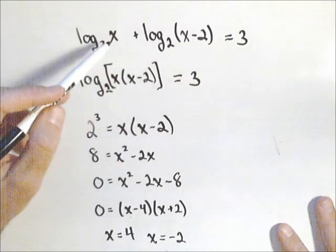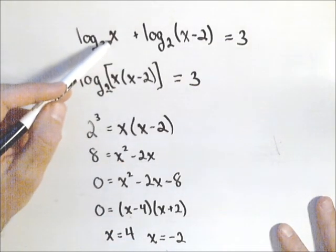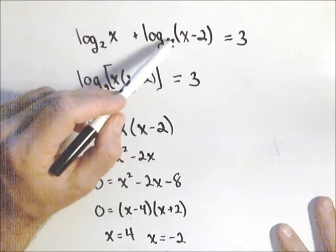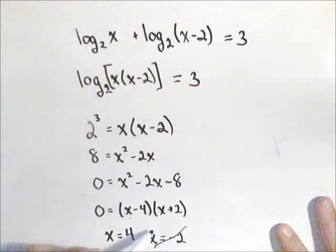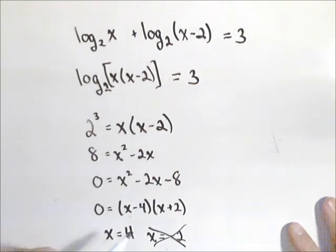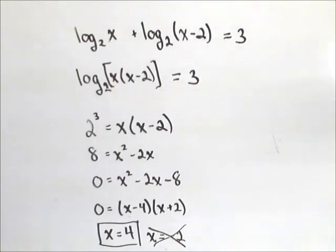But look what happens when we use negative two. That's not in the domain of log base two of x. It's also not in the domain of log base two of x minus two. So we want to make sure we eliminate that solution. And our only solution that actually works is x equals four. So always make sure to check your answers.